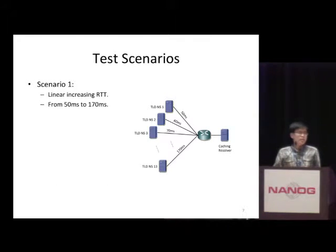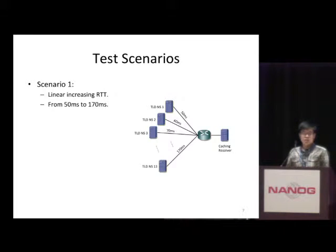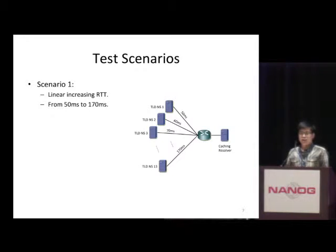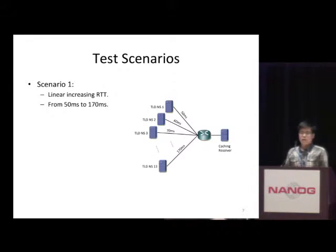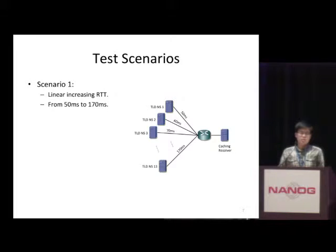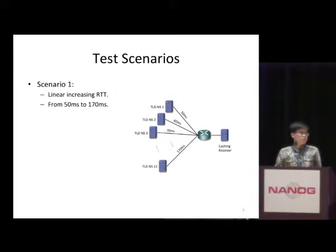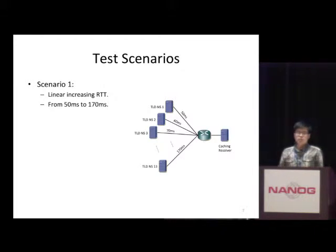We created several scenarios to test different properties of the cache resolvers. In the first scenario, we want to see if the cache resolvers can tell the difference in the round-trip time of different name servers so that they can distribute queries accordingly. The round-trip time to each name server varies from 50 milliseconds to 170 milliseconds.